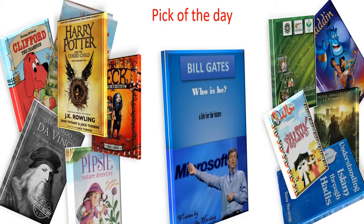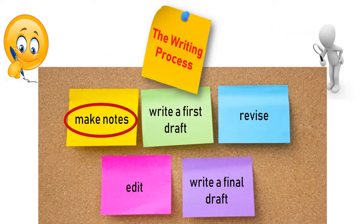Here we have plenty of books, and the book of the day is Bill Gates. Who is he? Here we have the writing process — there are five stages. Let's remember them together: number one, make notes — write your ideas; number two, write the first draft; number three, revise; number four, edit; and finally, write the final draft.